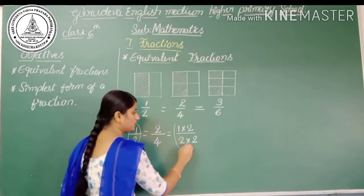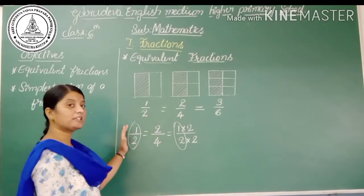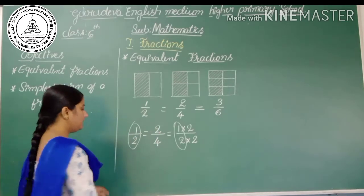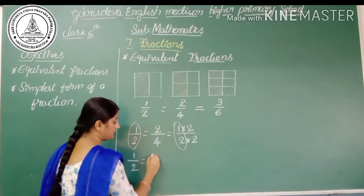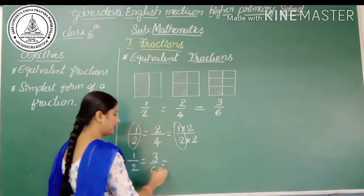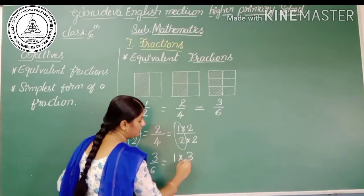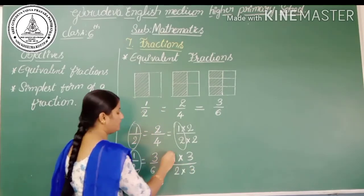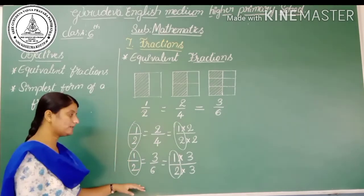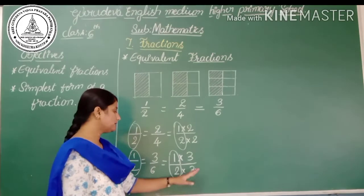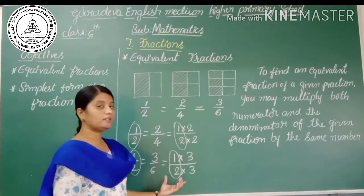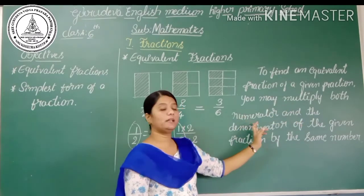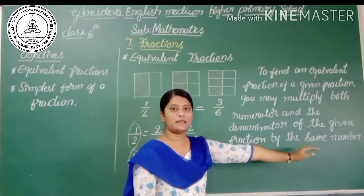Similarly, 1/2 is equal to 3/6. Here 3/6 can be written as 3 is 1×3 and 6 can be written as 2×3. So the first fraction 1/2 has its numerator and denominator multiplied by the same number. By observing these problems, we can say that to find the equivalent fraction of a given fraction, we multiply the numerator and the denominator of the given fraction by the same number.